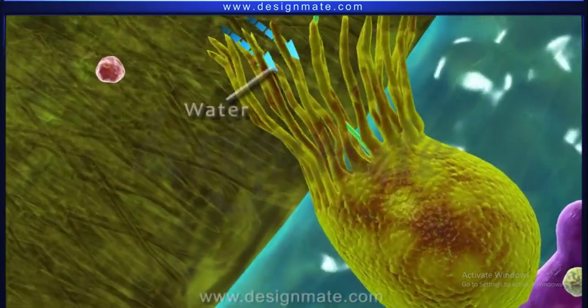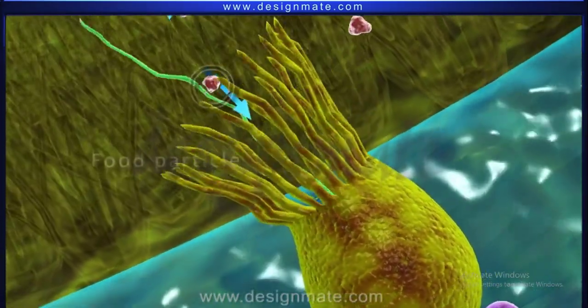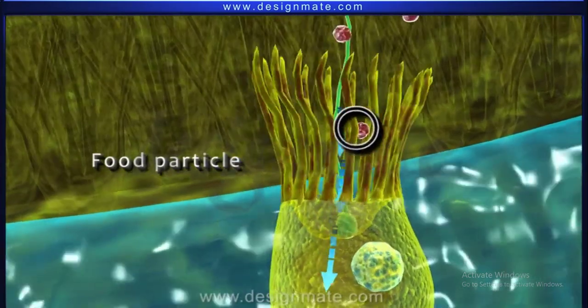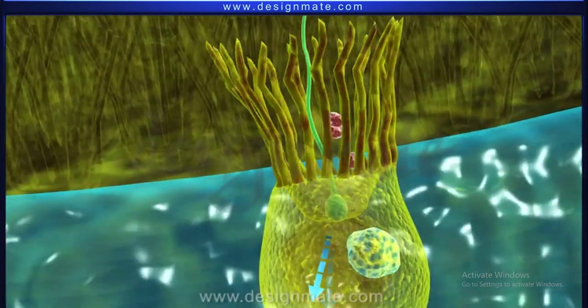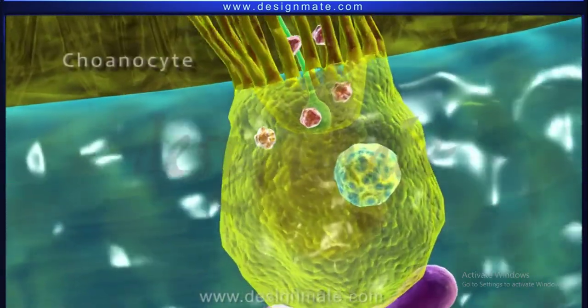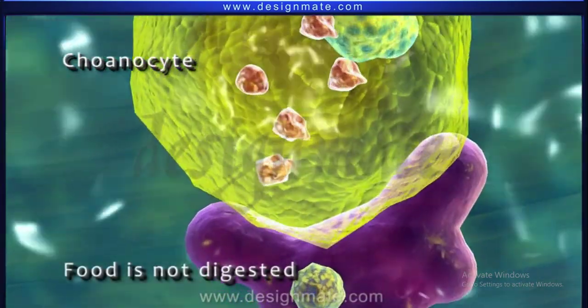The flagellum helps to draw water along with food particles into Choanocytes. The food is absorbed into the Choanocytes but it is not digested here.